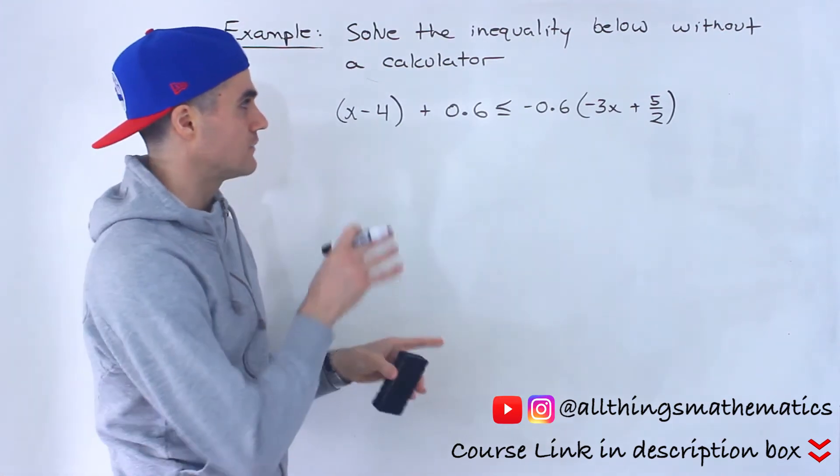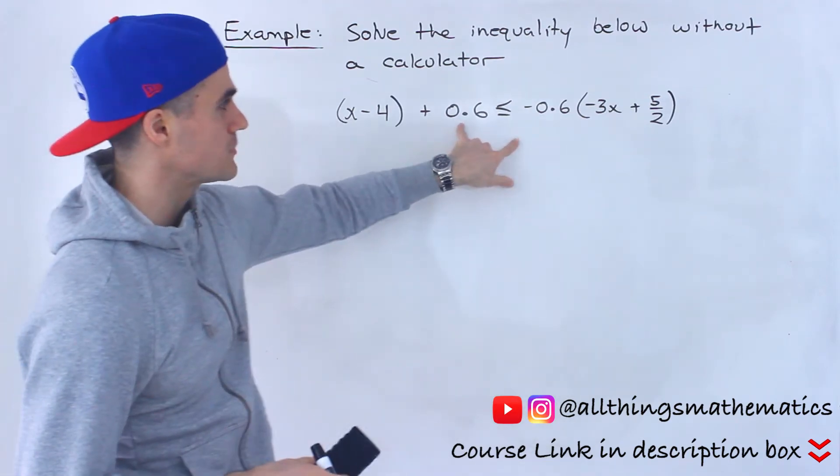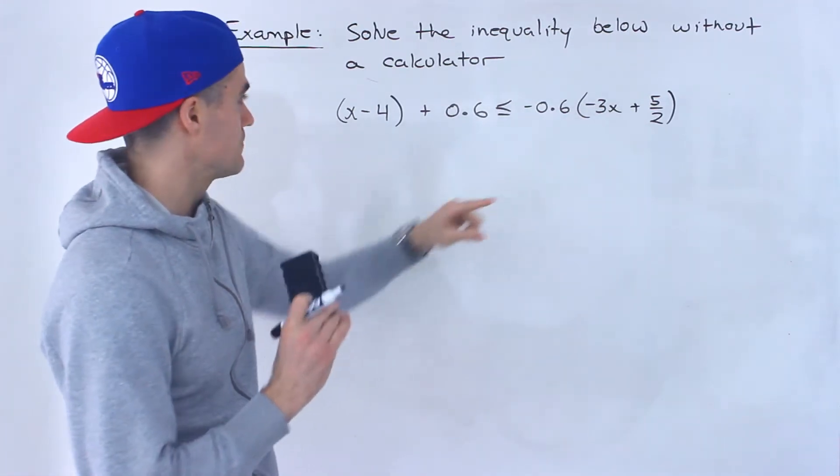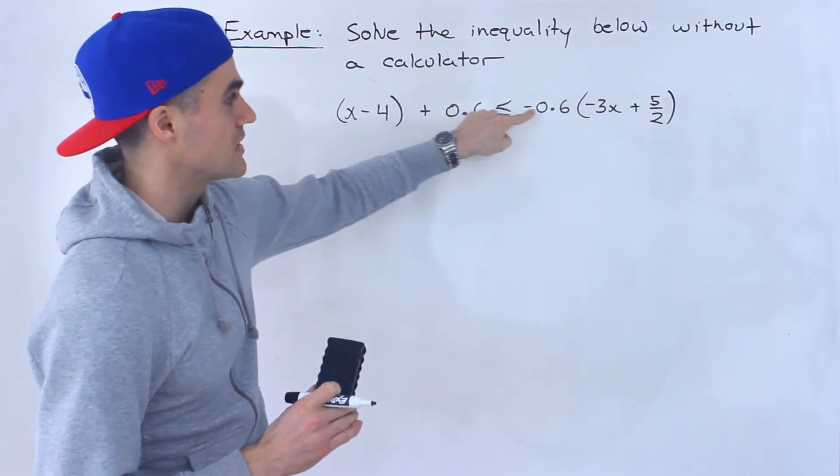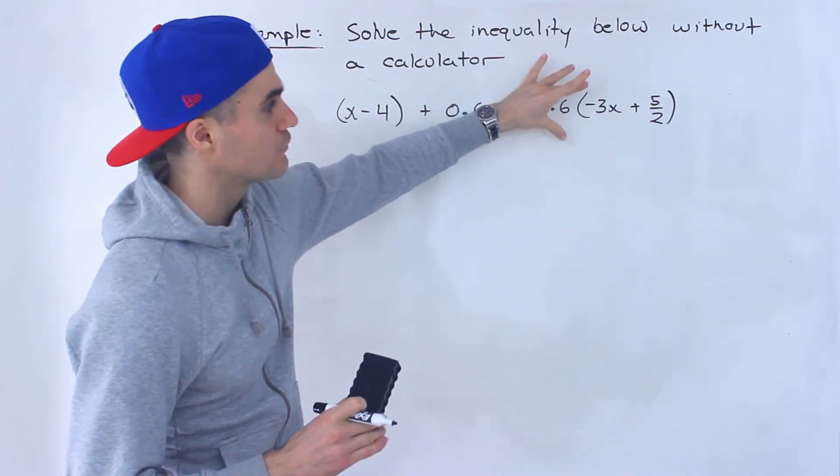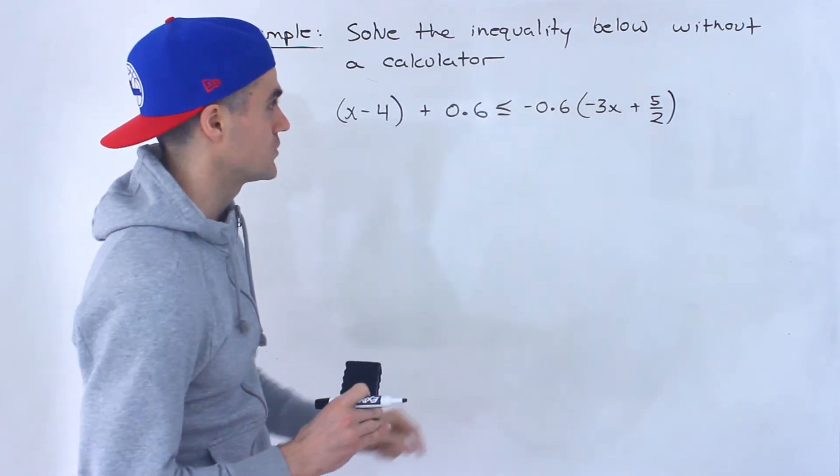Notice it's a kind of ugly one because we have decimals and fractions mixed up with it. So we got x minus 4 plus 0.6. When is that going to be less than or equal to negative 0.6 times negative 3x plus 5 over 2?